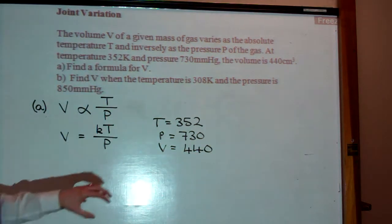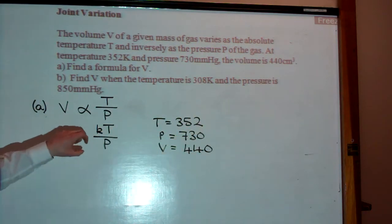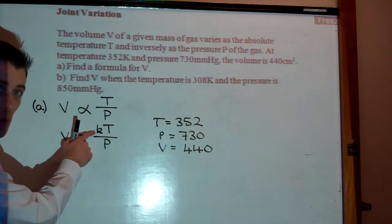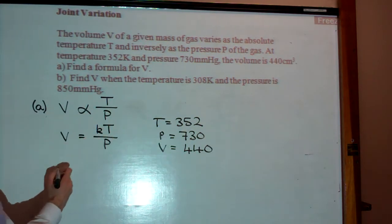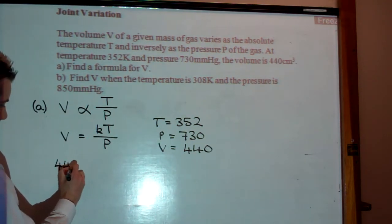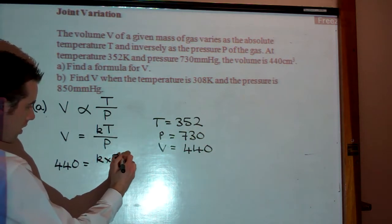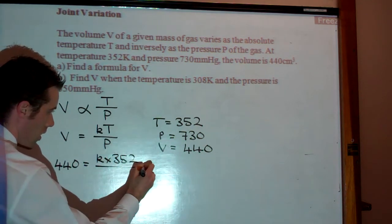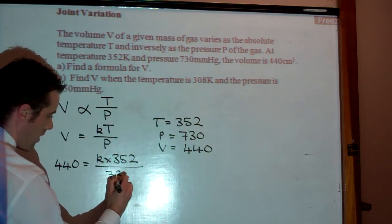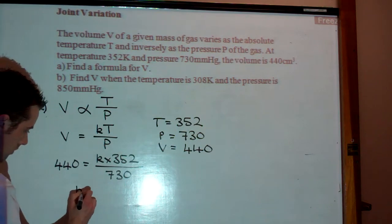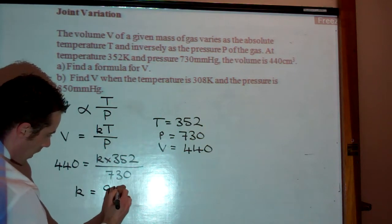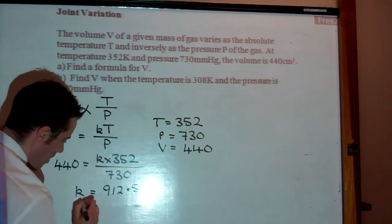So what we've got to do is substitute this information into a formula, and the only thing we're not going to know is k, which is going to allow us to solve for that. Alright, so we have 440 equals k times 352 divided by 730, and we work that out, we get an answer for k of 912.5.